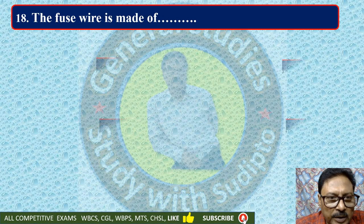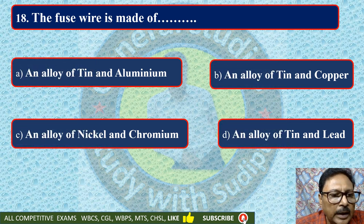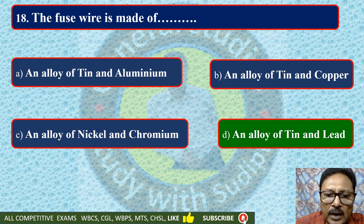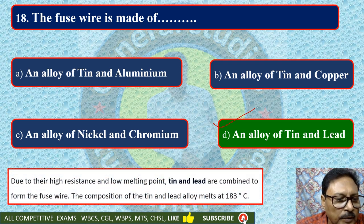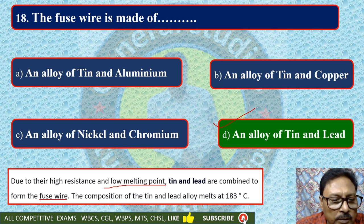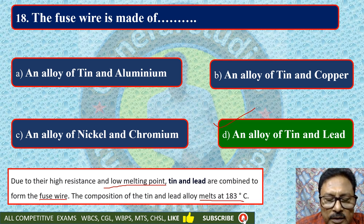The fuse wire is made of — an alloy of tin and aluminium, tin and copper, nickel and chromium, or tin and lead. The fuse wire is made of an alloy of tin and lead. Due to their high resistance and low melting point, tin and lead are combined to form a fuse wire. The composition of this tin and lead alloy melts at 183 degrees centigrade.